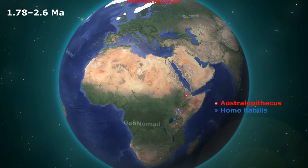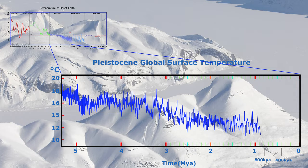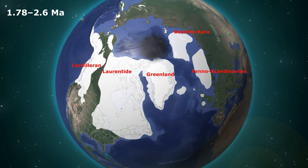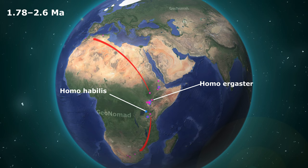Australopithecus and Homo habilis may have shared habitat in East Africa for over 600,000 years. At that time, the climate was 4 to 5 degrees Celsius cooler than today. The Laurentide, Fenno-Scandinavian, and Barents-Kara ice sheets in the Northern Hemisphere doubled in size. Around 1.9 million years, Homo ergaster also appeared, along with Homo erectus, known to have been the first to use fire about 1.7 million years ago.